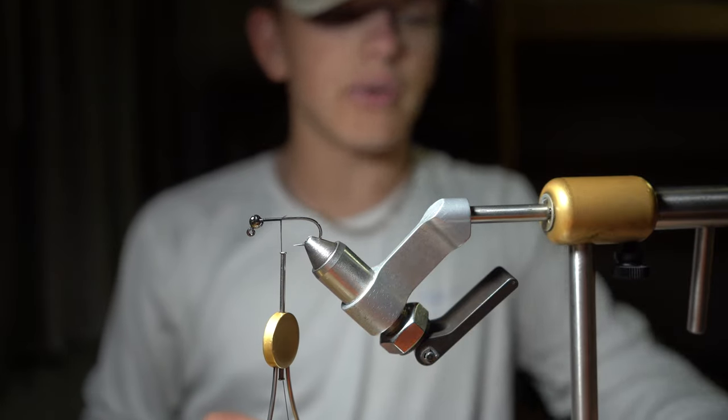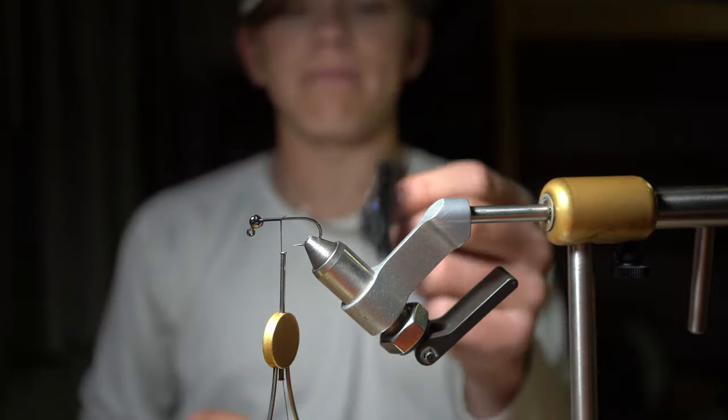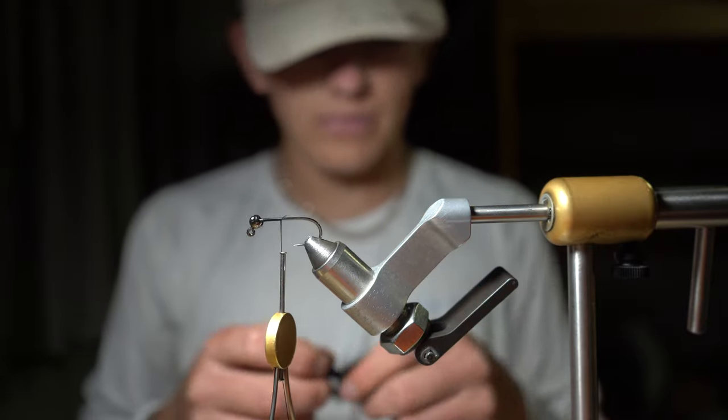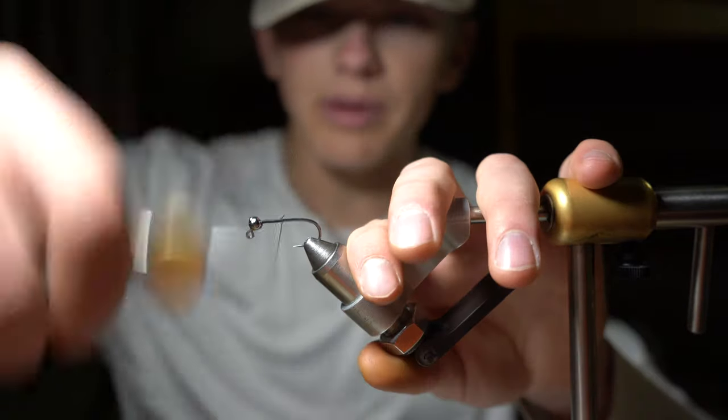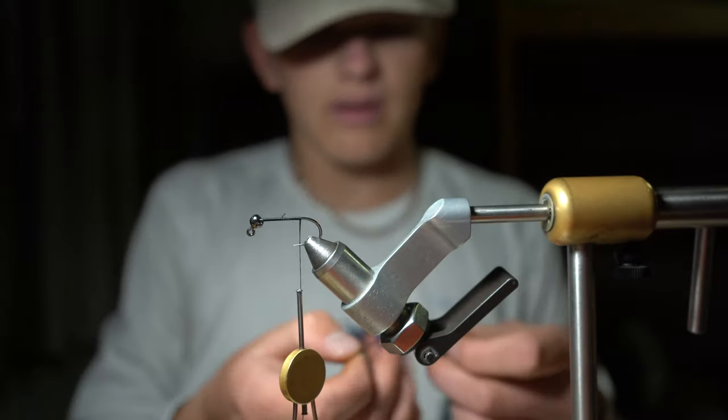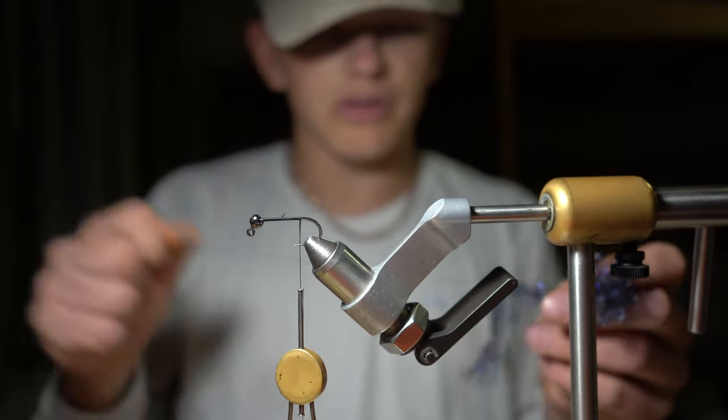You're also going to need black rabbit strip. First, I begin with my thread wrap and work it to the back, and we're going to tie in this puller chenille.